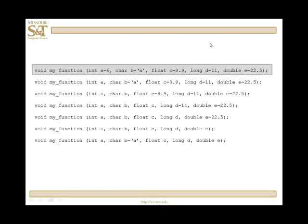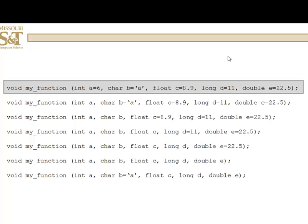Can you default more than one parameter? And the answer, of course, is yes. So, you've got some function, my function with an int char float long double. A, B, C, D, and E. You can default all of them. But if you default any of them, then no parameter after it in the list cannot be defaulted. In other words, if any parameter is defaulted, then every parameter after it must be defaulted.